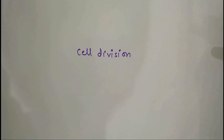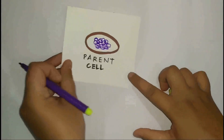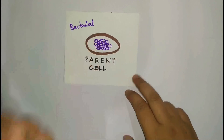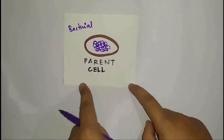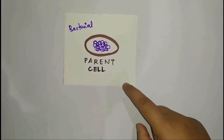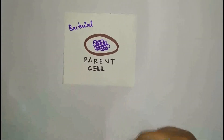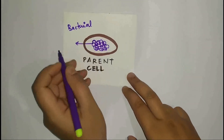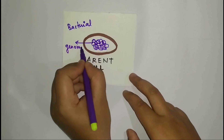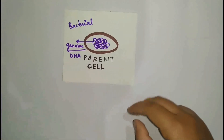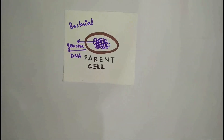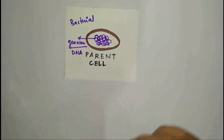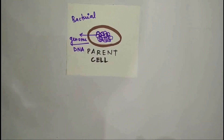Now we are going to discuss the exact process of cell division. We are going to consider a parent bacterial cell. The most important thing for this parent bacterial cell is that it needs to maintain its genome — the genome has to be transported to the daughter cell and has to be maintained. The genome is nothing but the DNA of the bacterial cell, and it is the most important thing the bacteria wants to maintain.